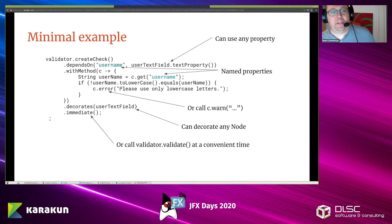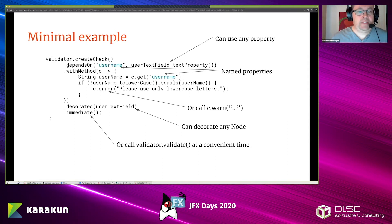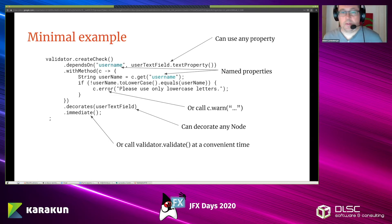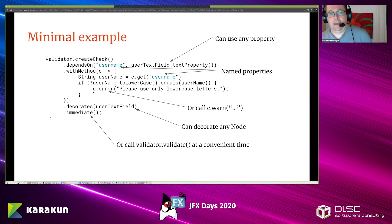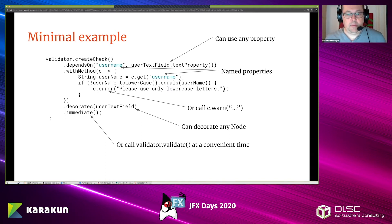Let's just jump right into the code. Here is a minimal example. We have this central validator object, which we create a check on. It's a fluent API — we say it depends on some property, which we give a name like 'username'. Anything that is observable can be used here. Then we have the central check method, which gets a context object. From this context I can get the actual current value of the property. Here I do the check: if the username is not all lowercase letters, I say that's an error — 'please use only lowercase letters.'